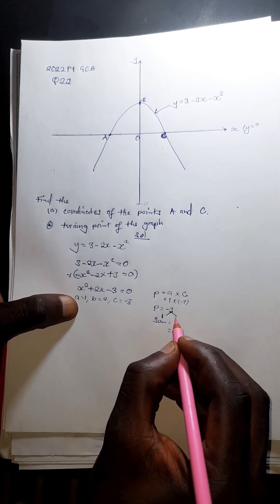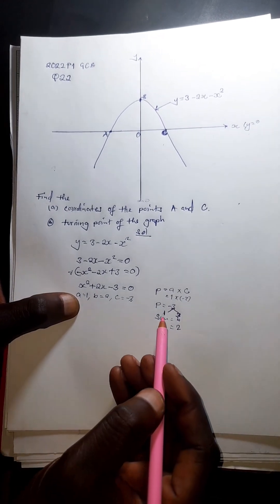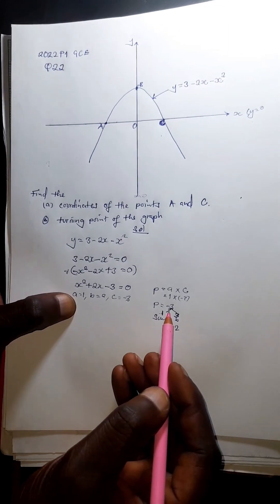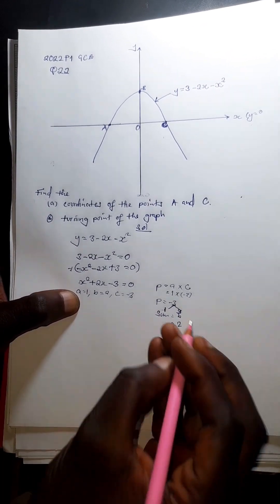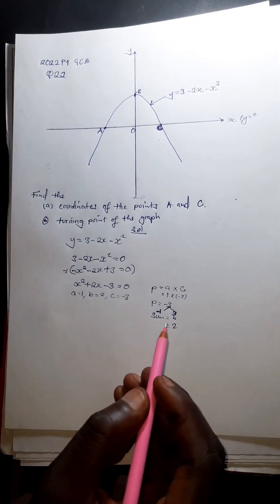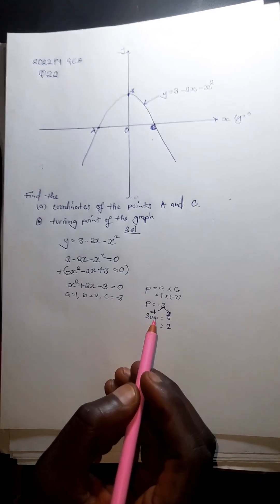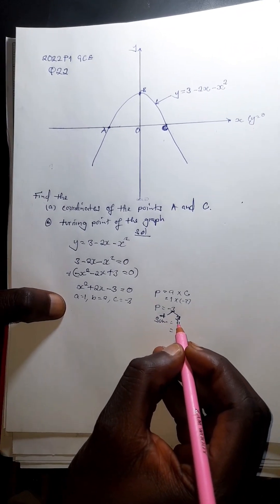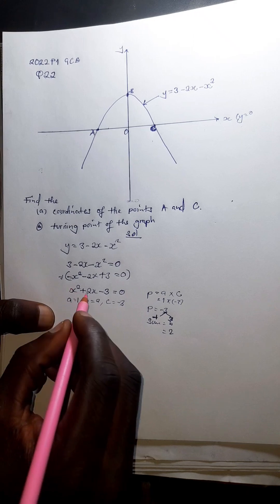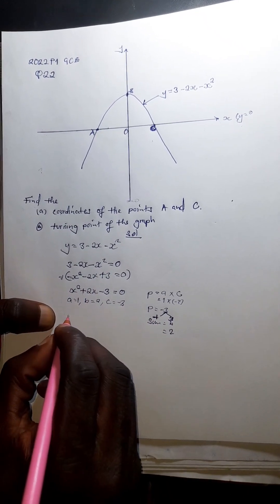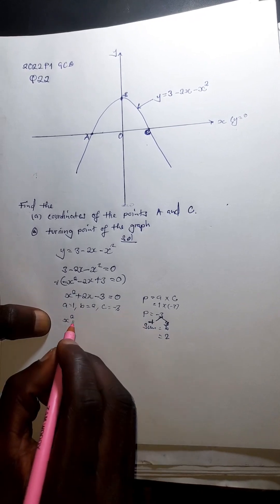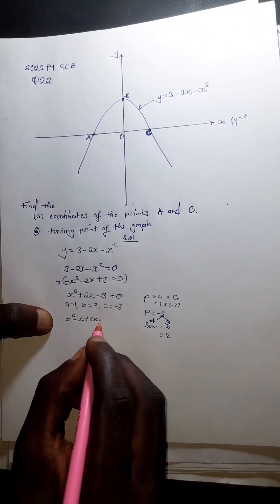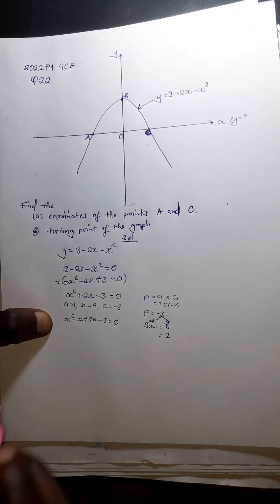The factors are −1 and +3. Checking: −1 × 3 = −3 ✓ and −1 + 3 = +2 ✓. So we replace the middle term: x² − x + 3x − 3 = 0, then factorize by grouping.